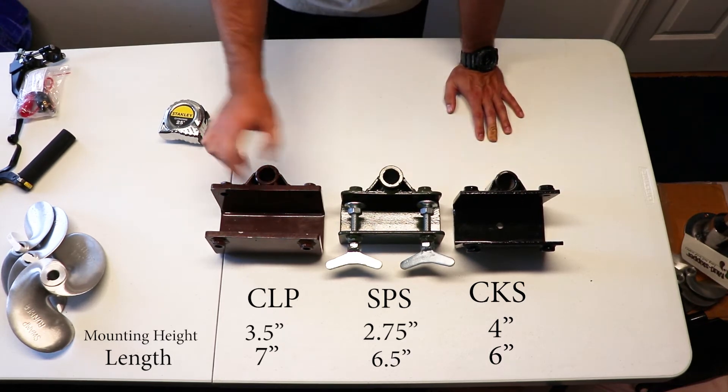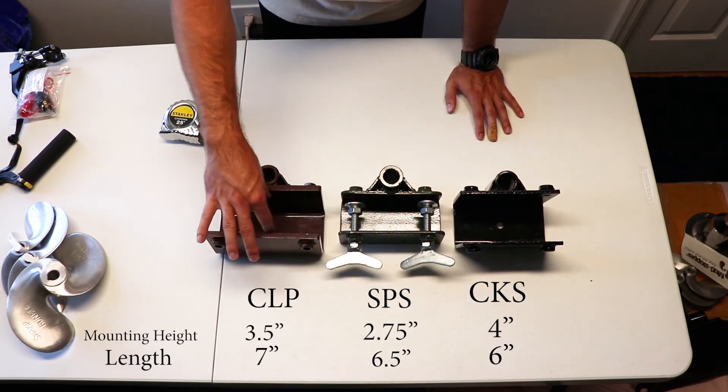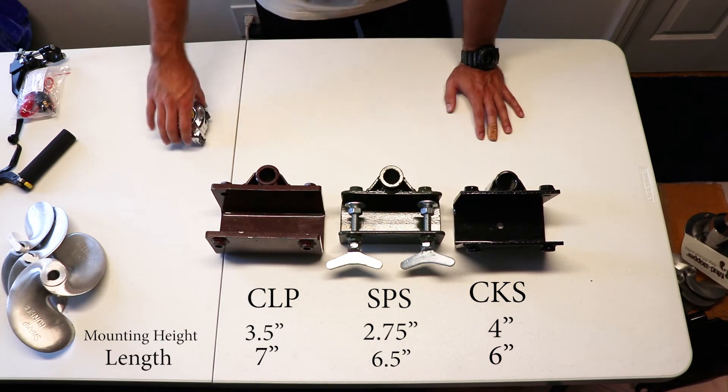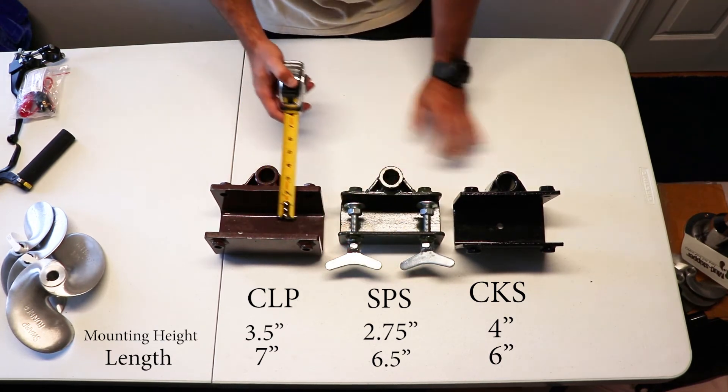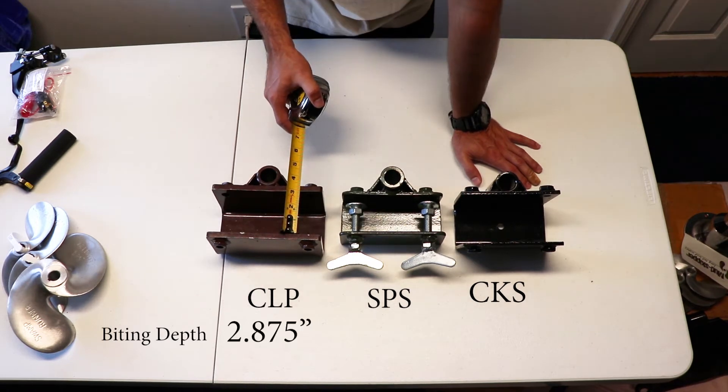So we've measured how long they are, the depth, let's see the biting power or depth of how far they bite. This one measures two and seven eighths on the CLP.